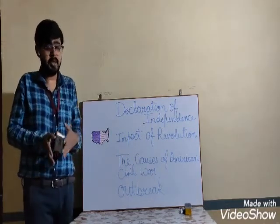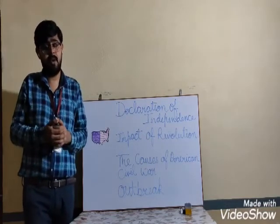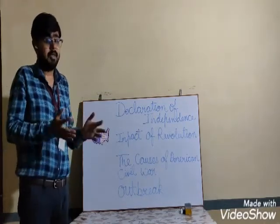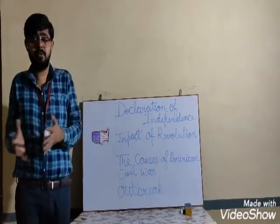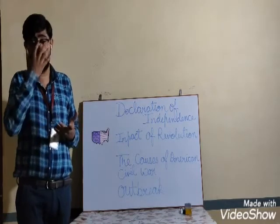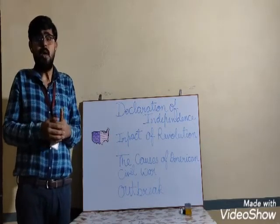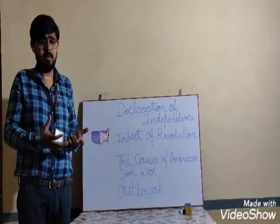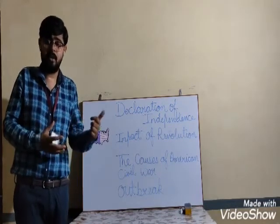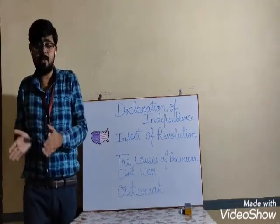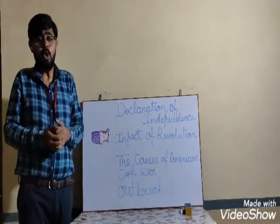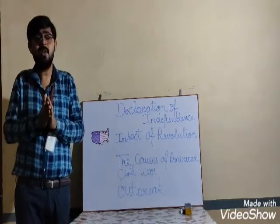The Boston Tea Party was an incident where some rebels disguised themselves as Native Americans and attacked a British ship that was carrying crates of tea. They threw the tea into the sea to protest the Tea Act, which the British were trying to impose to gain a monopoly over the tea trade. Americans feared this monopoly could extend to other businesses as well.